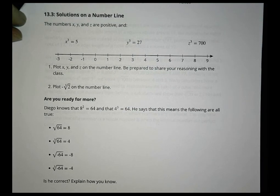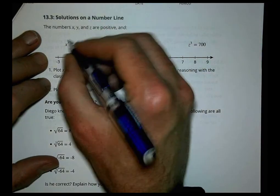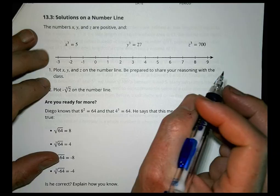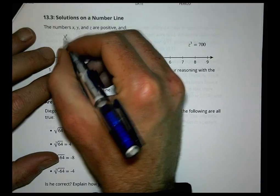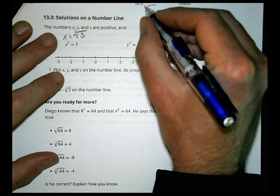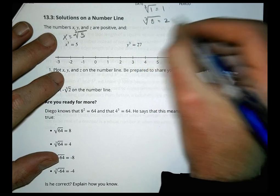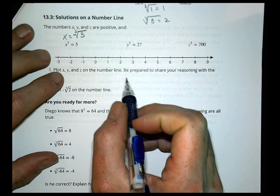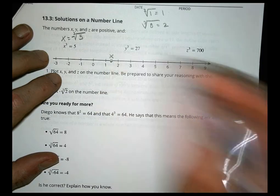The next activity is to plot some values on a number line. The numbers x, y, and z are positive. We want to plot x, y, and z on a number line and be prepared to share your reasoning. x is going to be the cube root of 5. We said the cube root of 1 is 1 and the cube root of 8 is 2, so 5 is going to be between 1 and 2. We can put a point somewhere in that region and call it x.